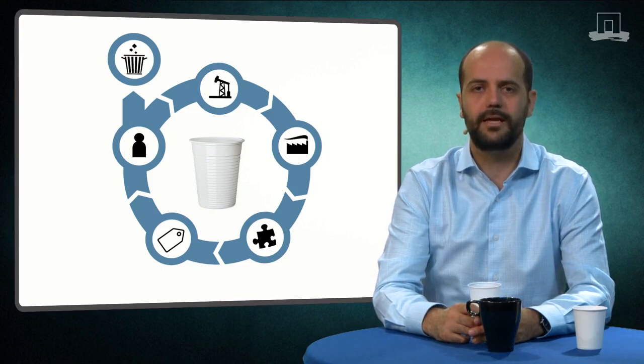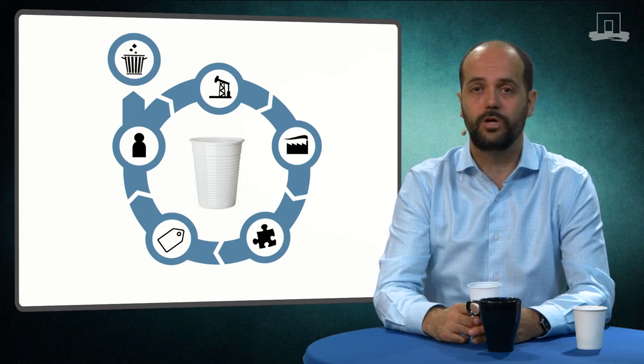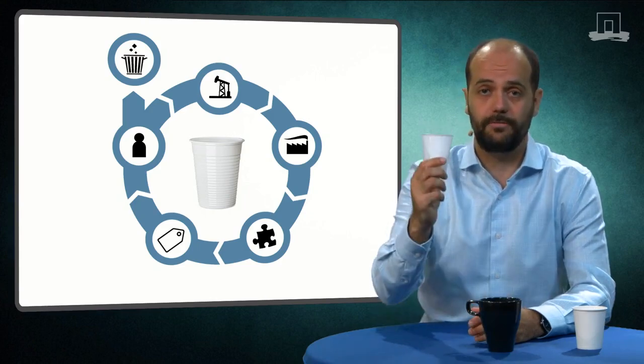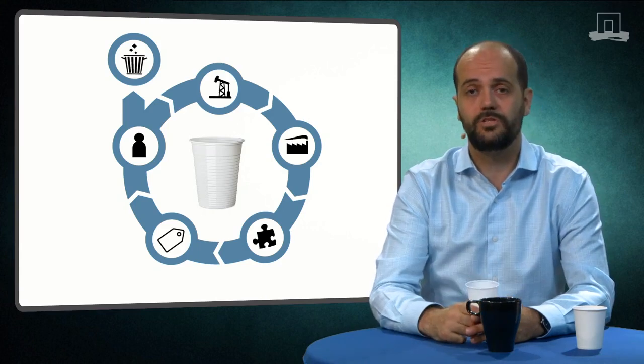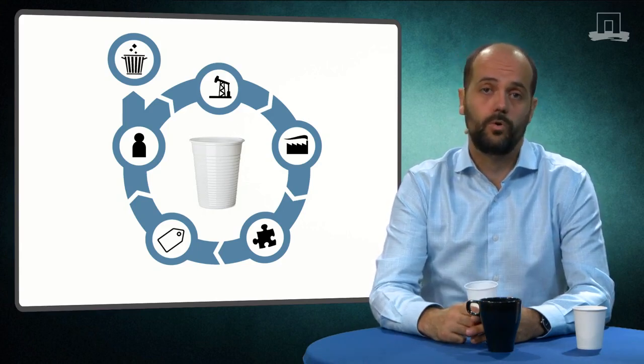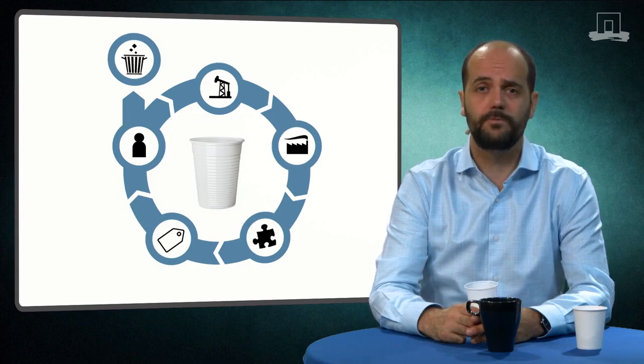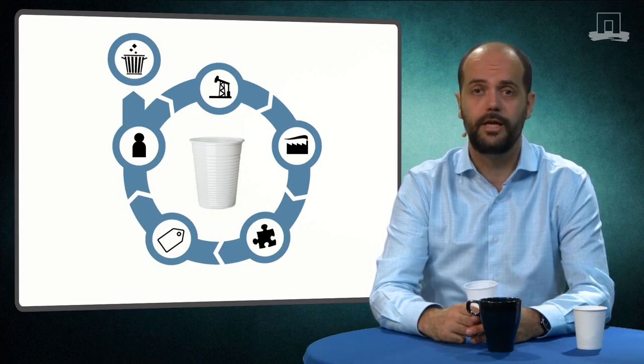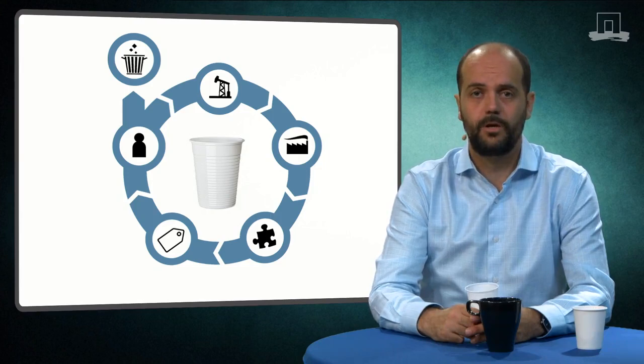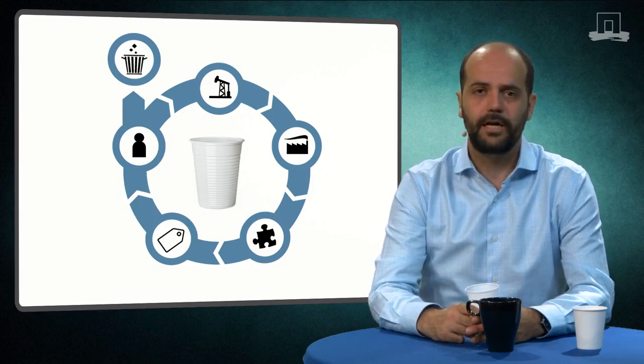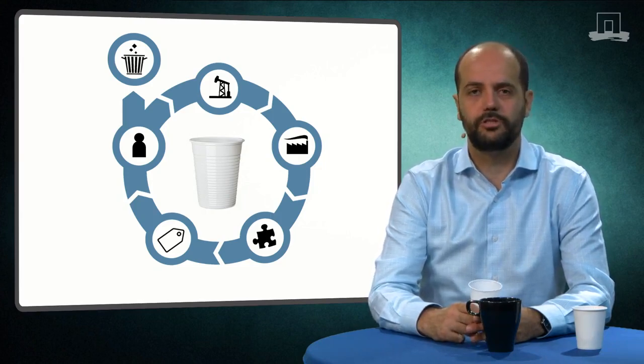Remember that LCA tracks the impact of a product throughout its life, starting from mining or extracting the raw materials to make the product. In the case of a plastic coffee cup, it begins with the extraction of fossil fuels, or if it is bioplastic, the harvesting of biomass. This is followed by the production, the distribution and the actual use of the cup, which is called the use phase. Finally, LCA considers the cup's eventual disposal.